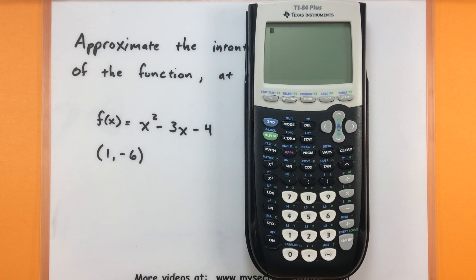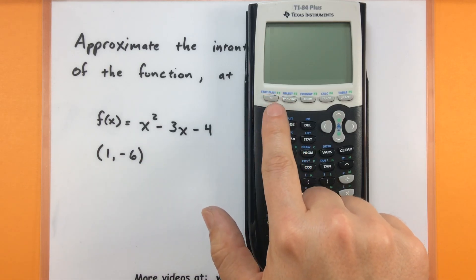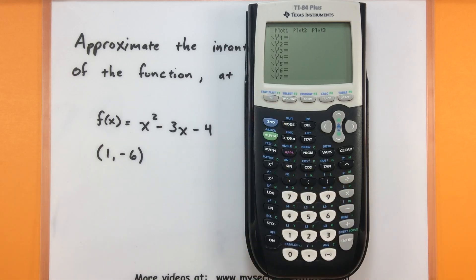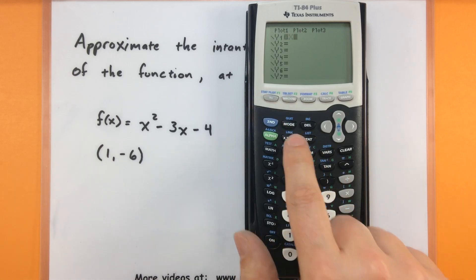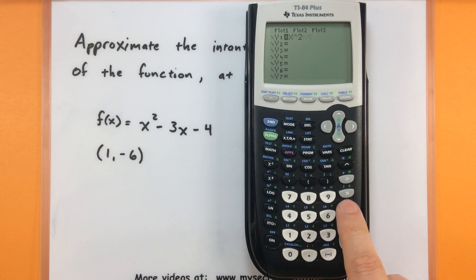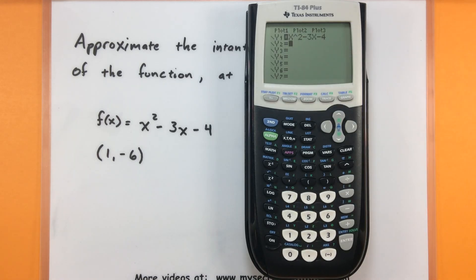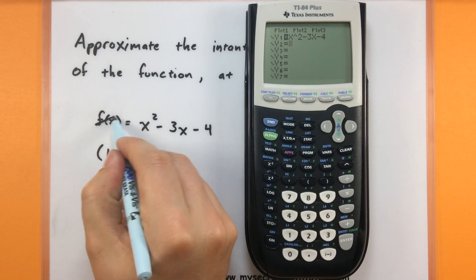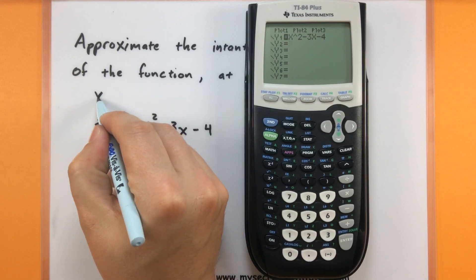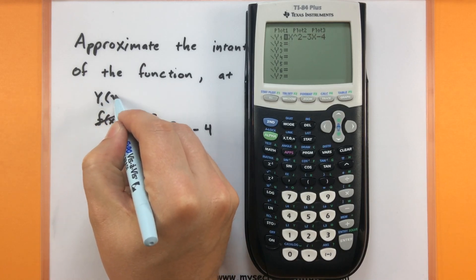The very first part of this is we need to get our function into the calculator itself. So go ahead and press your y equals button near the top here. And let's go ahead and type it in. So I have x squared minus 3x minus 4. Enter. So now our function is stored into the calculator itself. And just for our naming conventions, you'll notice that it stores it under y1. That will be important for later when we're making our slope formula. So this is really our y1 function renamed.